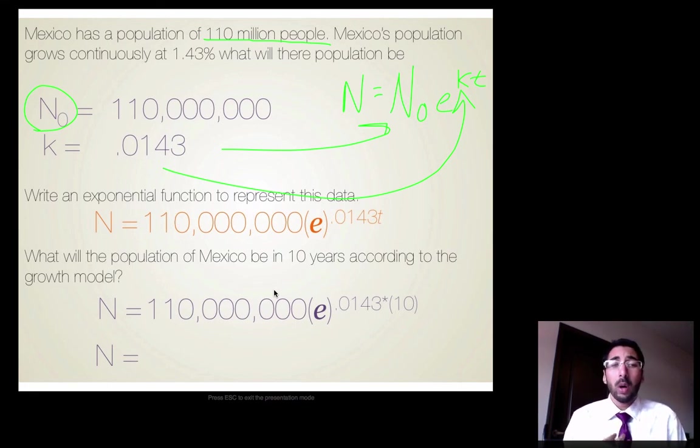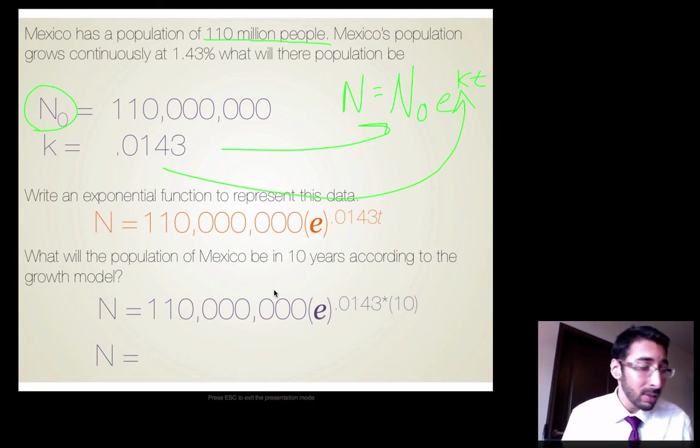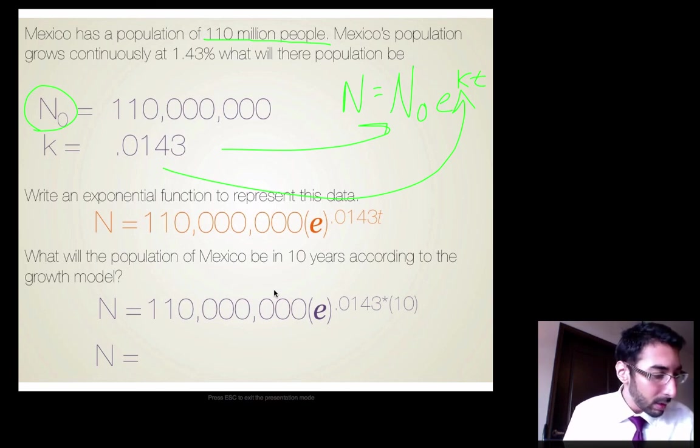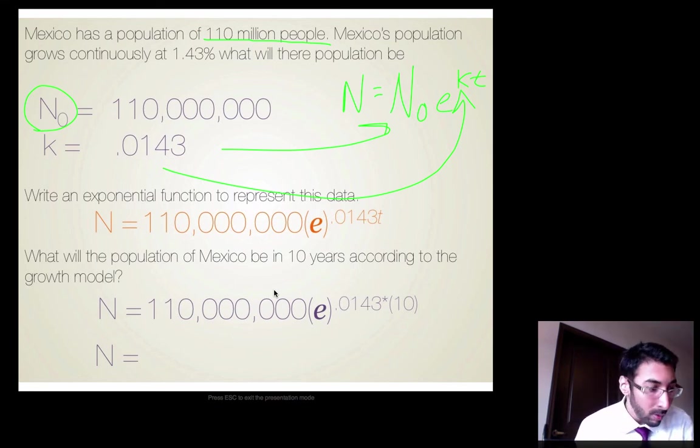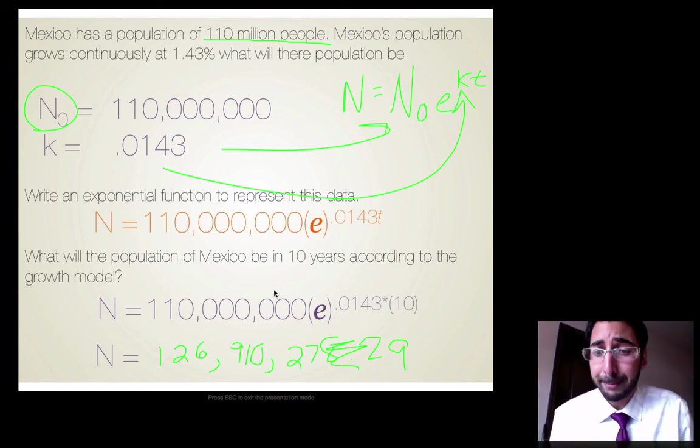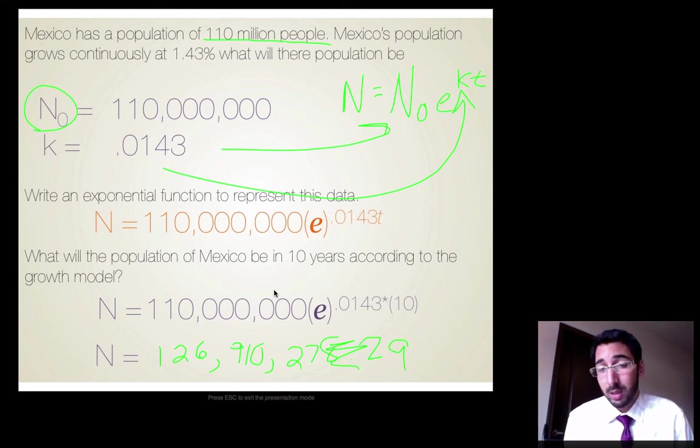So we need to know the time. And the question is asking us, what will the population of Mexico be in 10 years according to the growth model? Let's plug in 10 to our T. 110 million multiplied by E raised to the 0.0143 times 10. So I'm going to type this in my calculator. 110 million multiplied by E, so second that division key, raised to the 0.0143 times 10. And I get a population of 126,991,027.9 people. So I just round this to 9 because we're talking about people. So that's the population of Mexico in 10 years and we did this continuously.